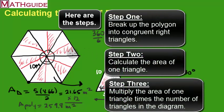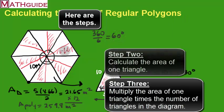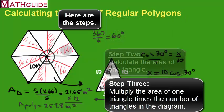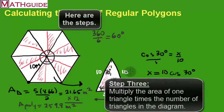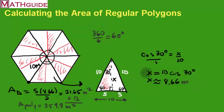Once you find the area of one of those little right triangles, multiply it by how many there are. Let's try one more — I'm going to speed things up for the second example.